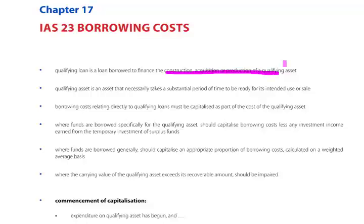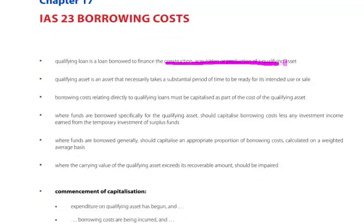Where funds are borrowed specifically for the qualifying asset, the amount to capitalise should be the borrowing costs incurred less the investment income which we have earned from the temporary investment of surplus funds. We'll see an example of this in a few moments. Where funds are borrowed generally, we should capitalise an appropriate proportion of borrowing costs calculated on a weighted average basis. Where the carrying value of the qualifying asset may now exceed its recoverable amount, then the asset should be reviewed for impairment.